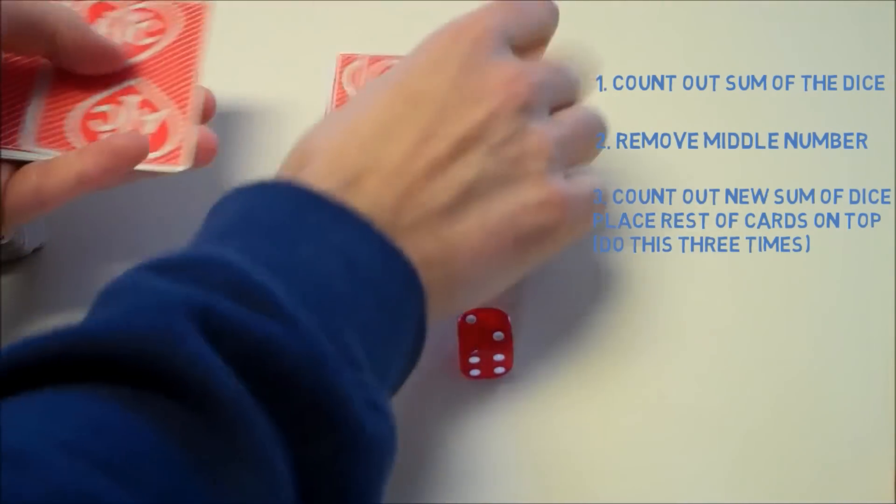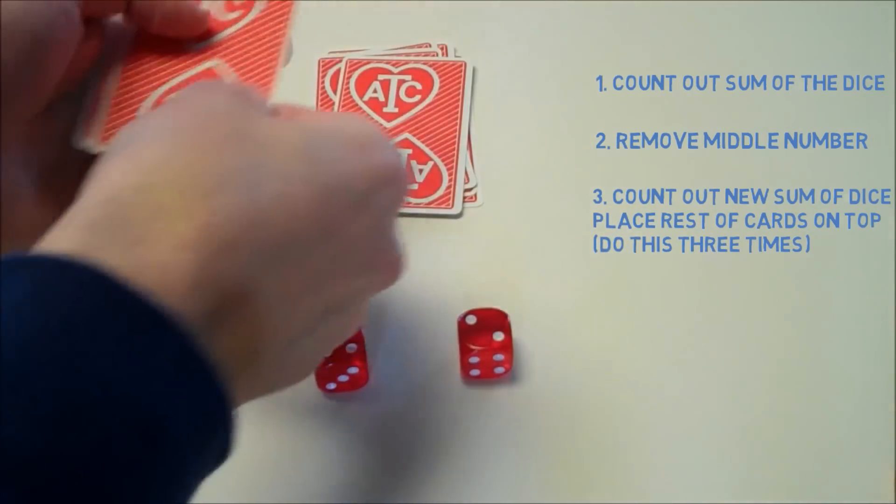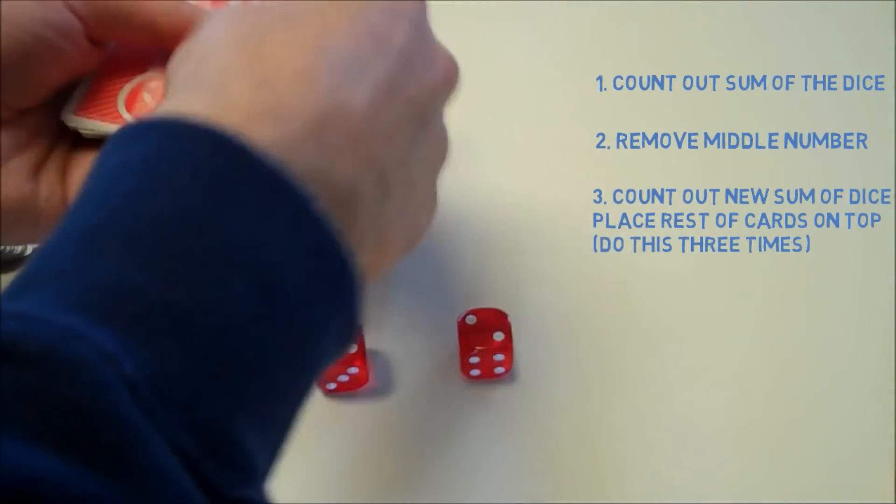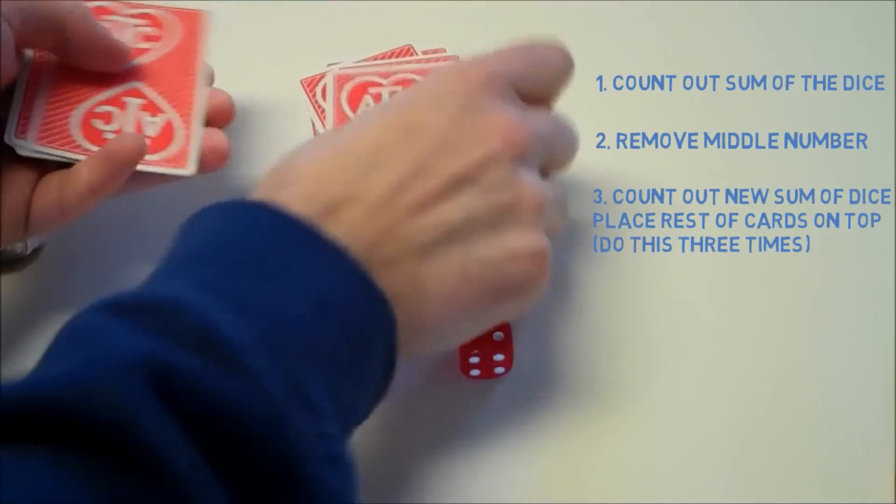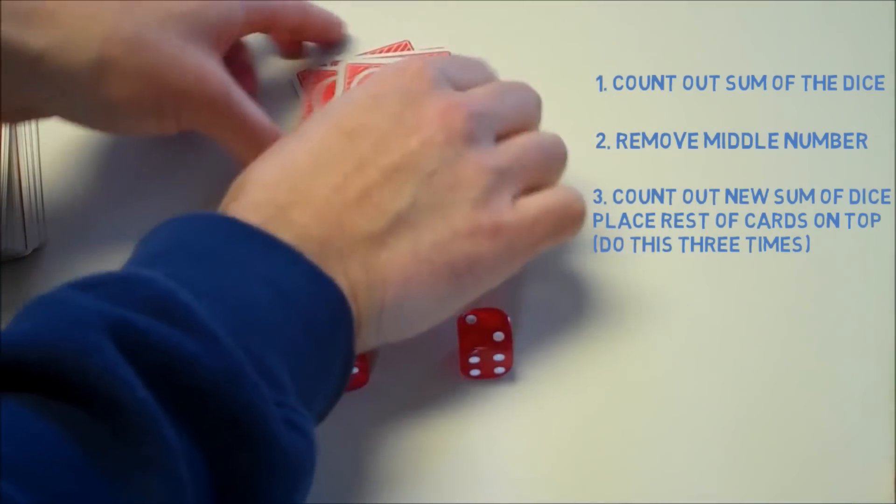And then we do this three times because the trick involves three dice. So we count out seven cards, put the deck on top. And then we count out seven cards again, and then we put the deck on top.